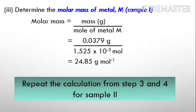Now we obtain the molar mass of metal M. The molar mass formula is molar mass equals mass over moles of metal M. Since sample one is 0.0379 gram divided by the number of moles 1.525 × 10^-3 mol, the molar mass answer is 24.85 gram per mol.